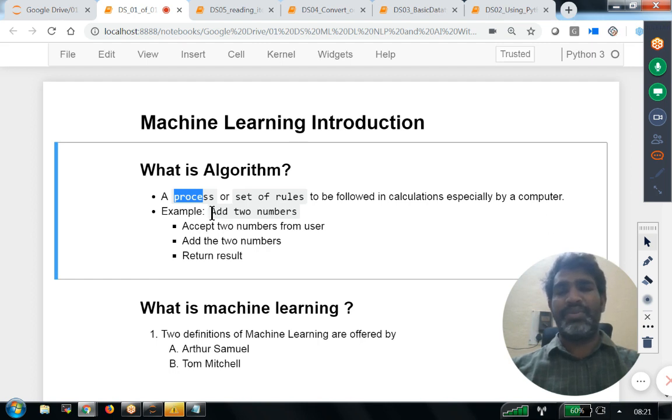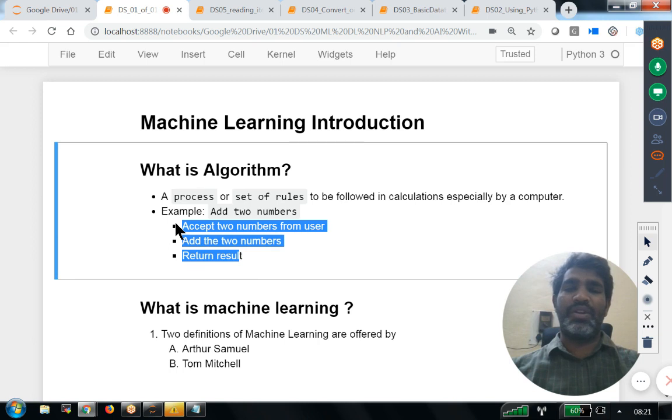For instance, we'll take one simple example: adding two numbers. Accept any two numbers from the user, add those two numbers, then return the result. The work we are doing here is nothing but an algorithm. In simple words, a sequence of steps is called an algorithm, a set of rules is called an algorithm.